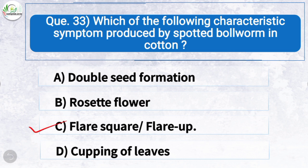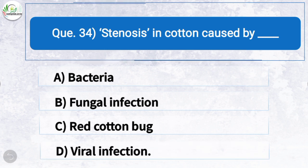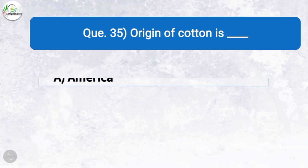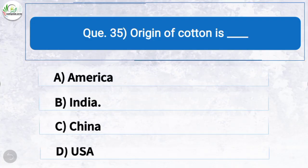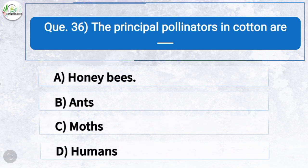Question thirty-three: Which characteristic symptom is produced by spotted ball worm in cotton? The correct answer is option C: flared square. Question thirty-four: Stenosis in cotton is caused by — the correct answer is option D: virus, so stenosis in cotton is a viral infection. Question thirty-five: Origin of cotton is — the correct answer is option B: India.